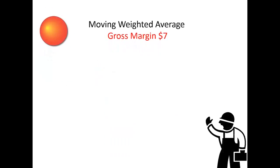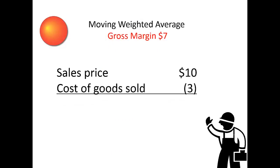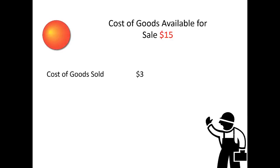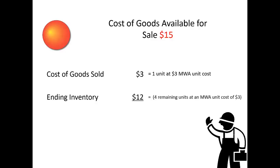Moving Weighted Average's gross margin turns out to be $7: sales price of $10 less cost of goods sold of $3 equals gross margin of $7. The original cost of goods available for sale of $15 reconciles as follows: cost of goods sold of $3 (one unit at $3), plus ending inventory of $12 (four remaining units at an average cost of $3 per unit), equals total cost of goods available for sale of $15. All goods either get expensed as cost of goods sold ($3) or remain in ending inventory ($12).